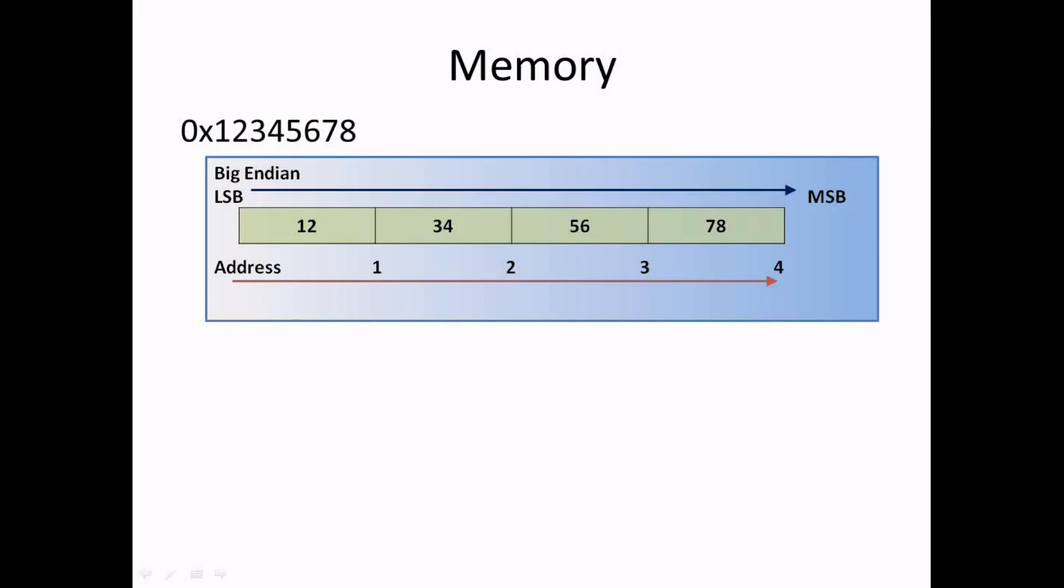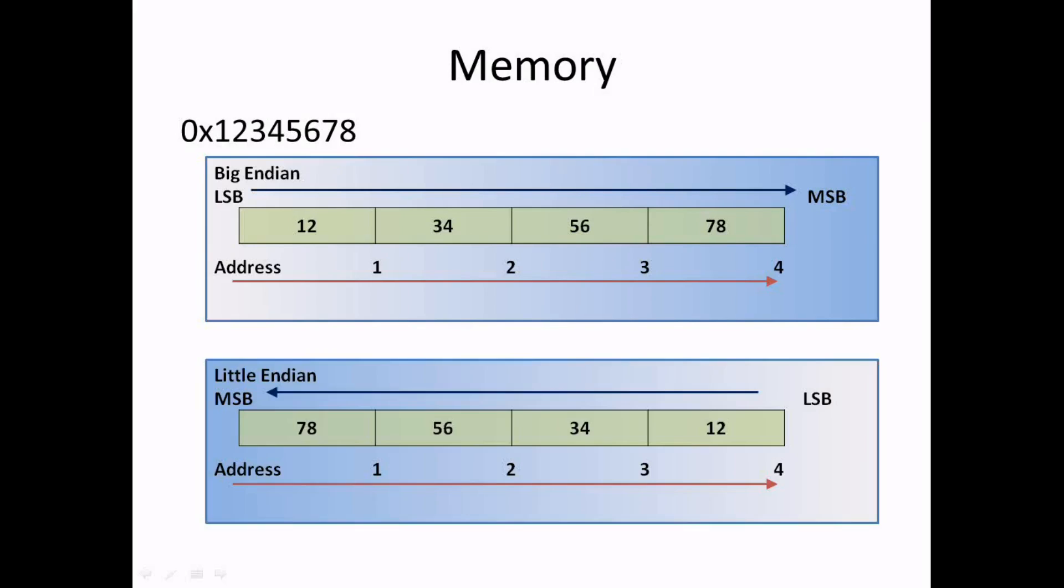Left to right, the way we read, or right to left. The first approach is called big endian and the second approach is called little endian. So on a big endian system, this number would look like 1 2 3 4 5 6 7 8, while on a little endian system it would look like 7 8 5 6 3 4 1 2.